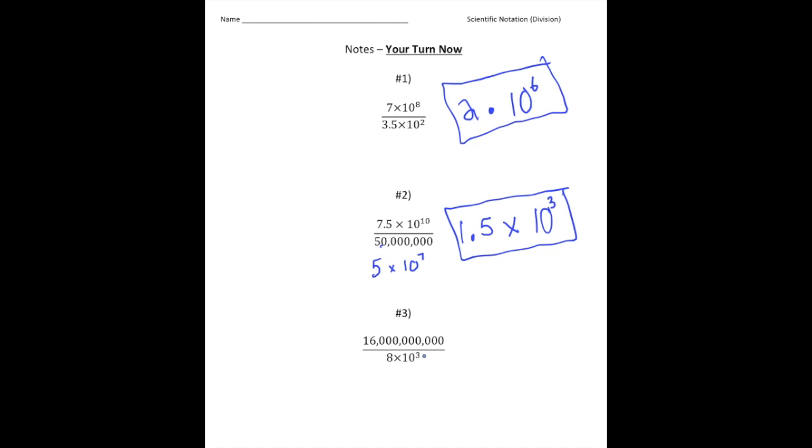Now, the last one, notice this time the numerator is not written in scientific notation. So, I'm going to rewrite this as 1.6 times. And this time it's going to be, let's see, 3 6 9 to the 10th power. 10 to the 10th power. Alright?